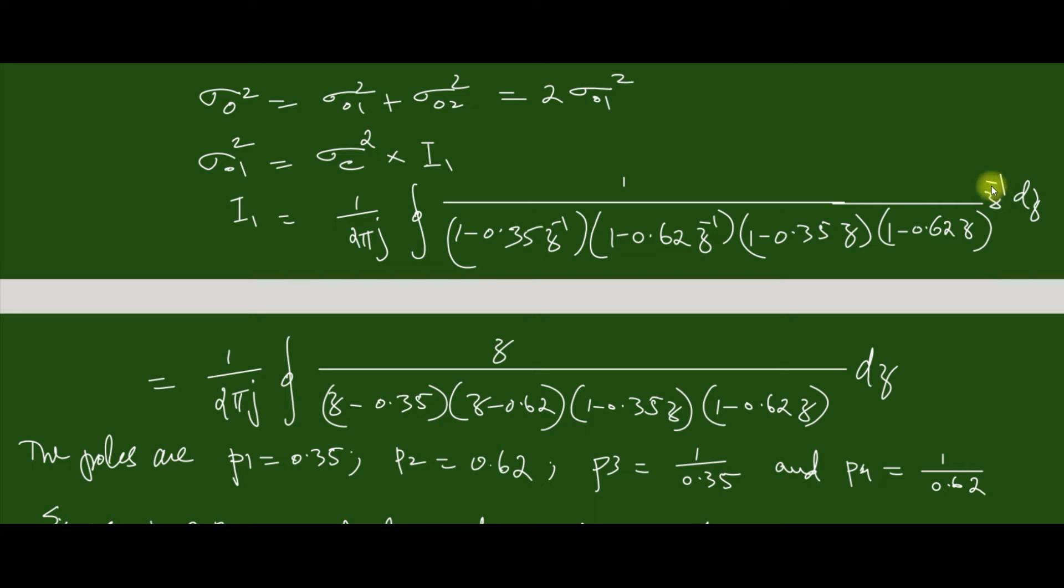So z inverse into z square gives z. Then z into this gives plus z minus 0.35, and the next z multiply gives this one. So from which we can easily determine the poles.